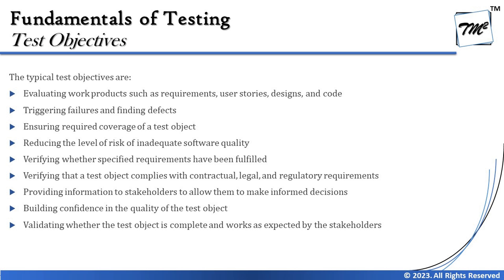When we talk about ensuring required coverage of a test object, it means writing the number of test cases necessary to cover the required expectation. Coverage measurement is equally important — you need to write an appropriate number of test cases to achieve the required coverage for a particular functionality or feature. Also, reducing the level of risk of inadequate software quality is another objective. Risk will be discussed in detail in Chapter 5, but as part of testing our responsibility is to reduce the level of risk.